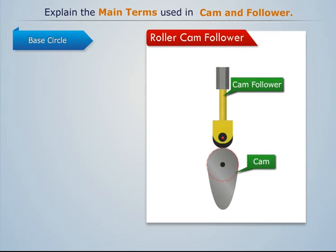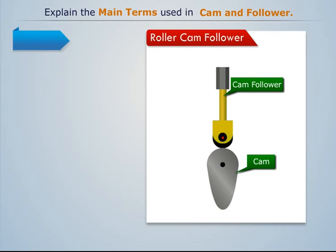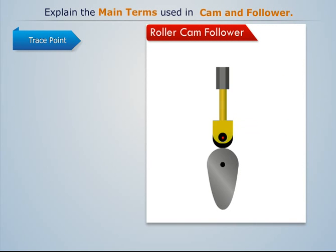Base circle: it is the smallest circle that can be drawn in the cam profile. Trace point: it is a reference point on the follower that is used to generate the pitch curve.